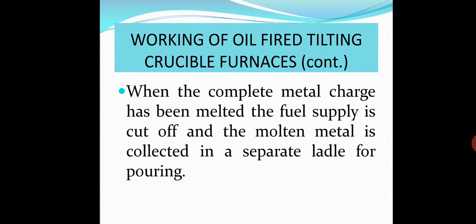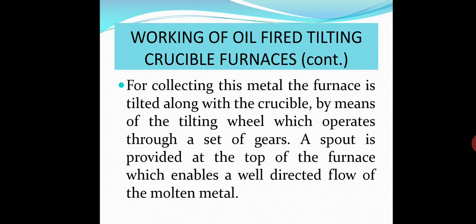When the complete metal charge has been melted, the fuel supply is cut off, and the molten metal is collected in a separate ladle for pouring. For collecting this metal, the furnace is tilted along with the crucible by means of the tilting wheel, which operates through a set of gears. A spout is provided at the top of the furnace, which enables a well-directed flow of the molten metal. This tilting mechanism helps to spout the molten metal into the ladle.